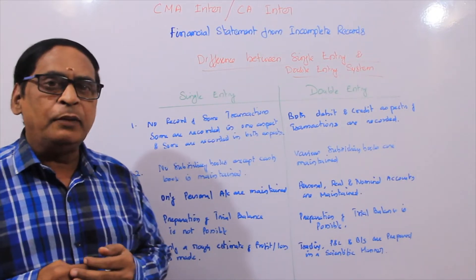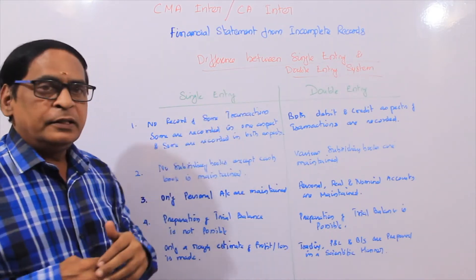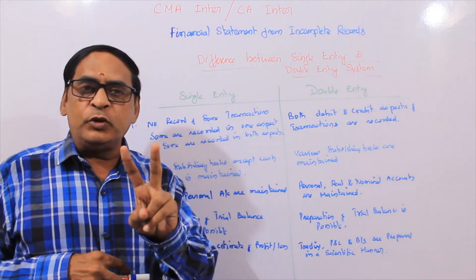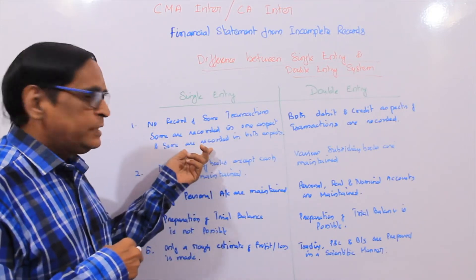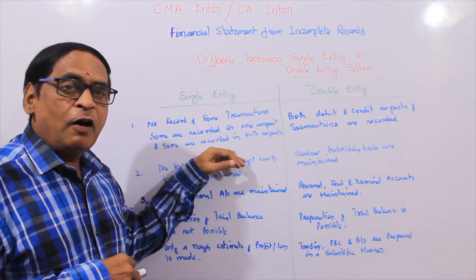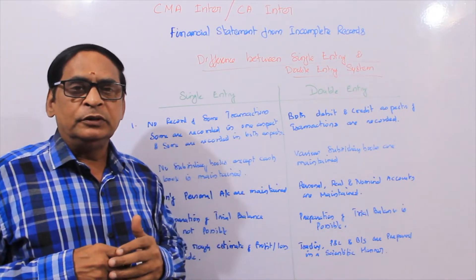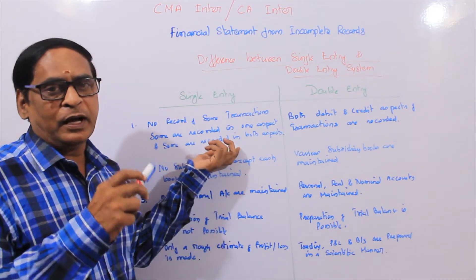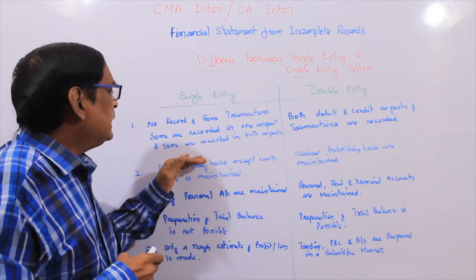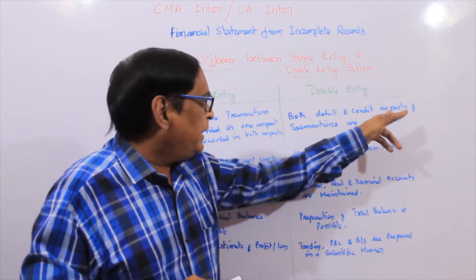What is the difference between single entry system and double entry system? Under single entry system, no record of some transactions — transactions are recorded in one aspect only. One debit and credit. But in single entry system, only one entry will be recorded. The lack of uniformity arises because only one side — debit or credit — is recorded.